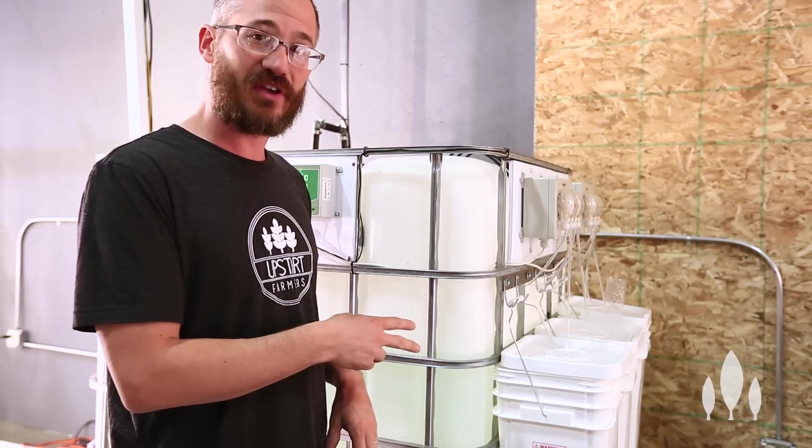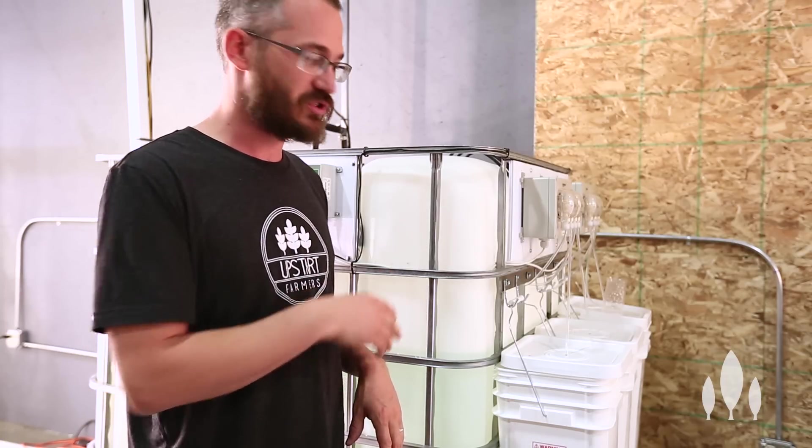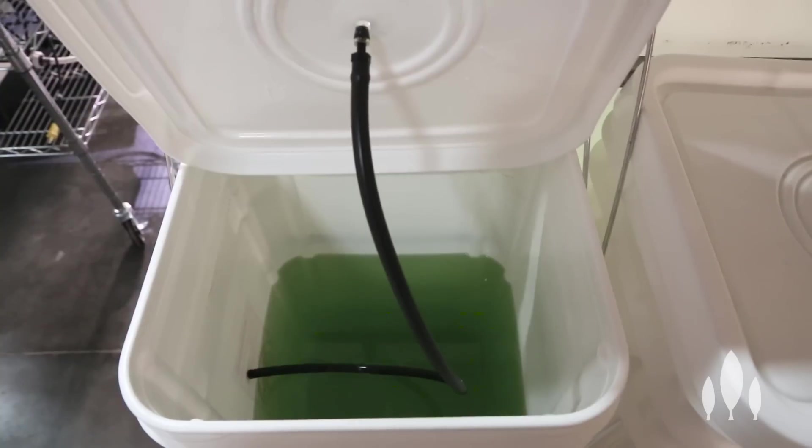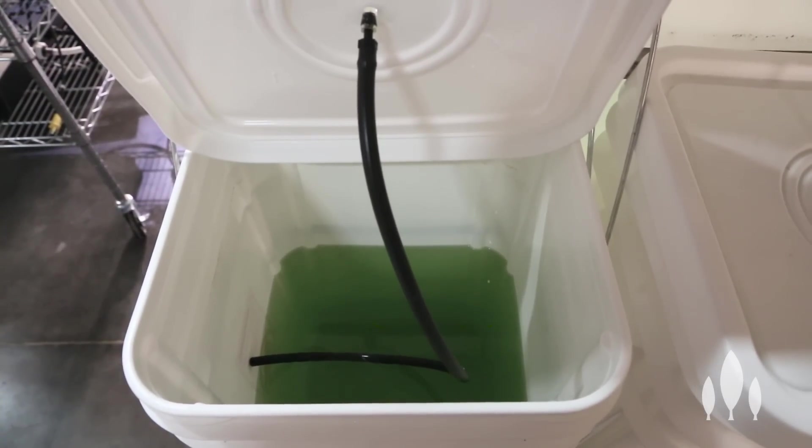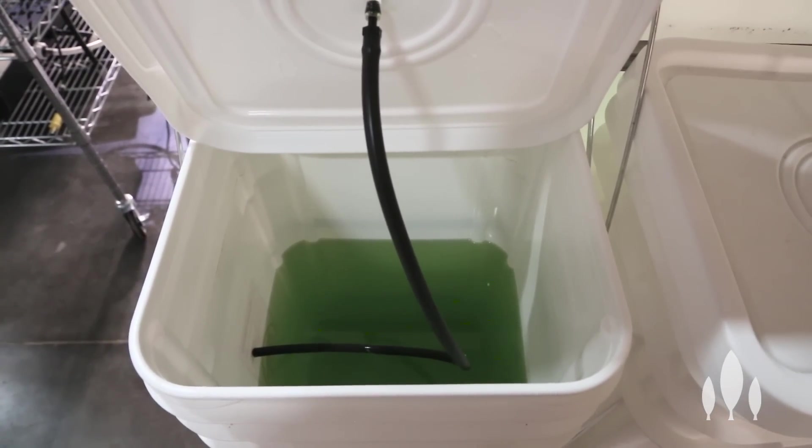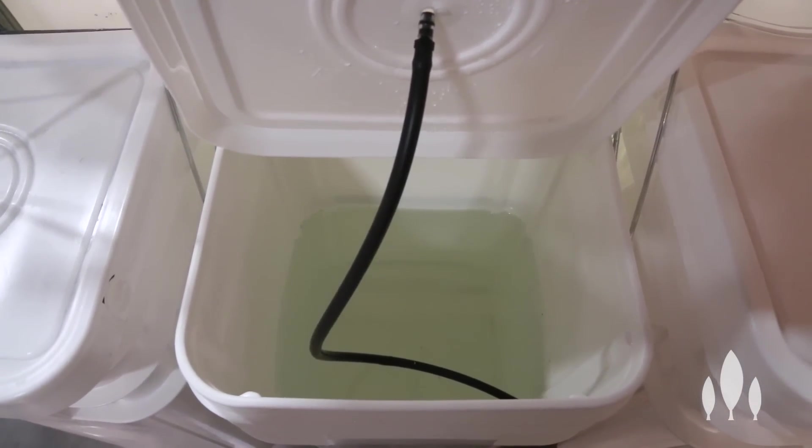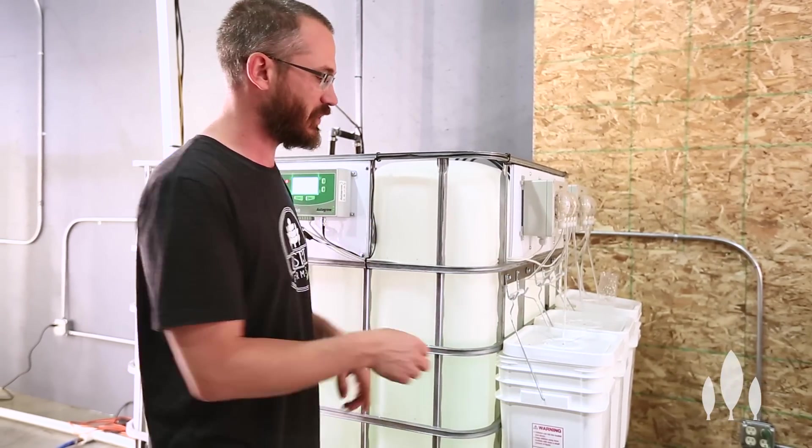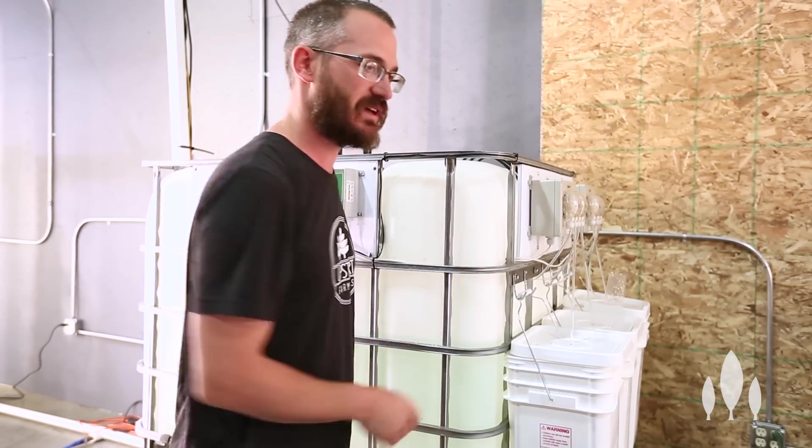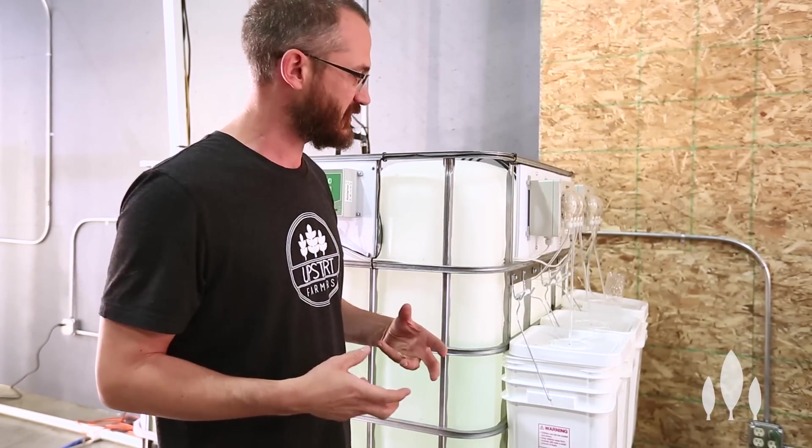In these buckets over here, we're running a two-part solution. So I've got my part A and my Epsom salt in this bucket, and then I've got my part B or my calcium nitrate in this bucket, pre-mixed, concentrate, and it just doses four seconds on this and then four seconds on this every time it needs to raise EC.